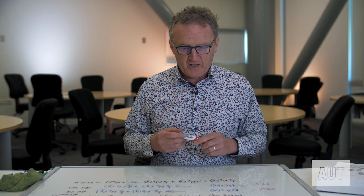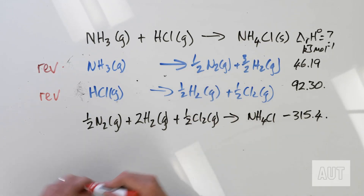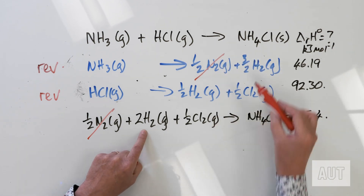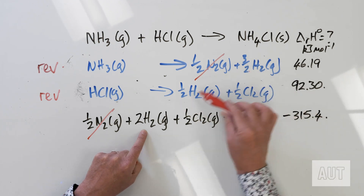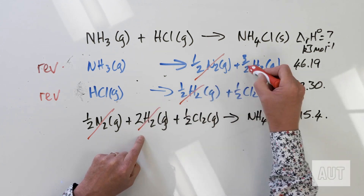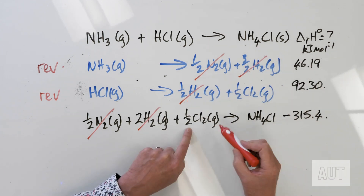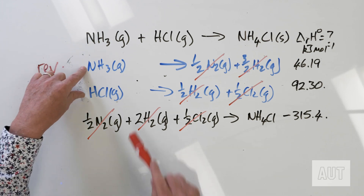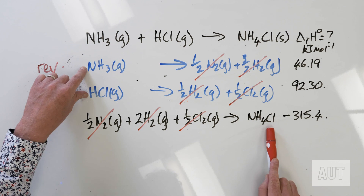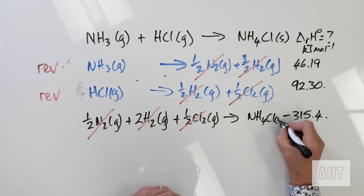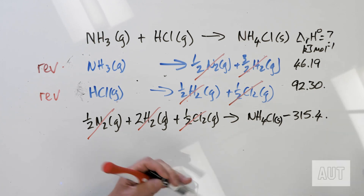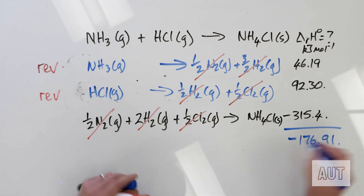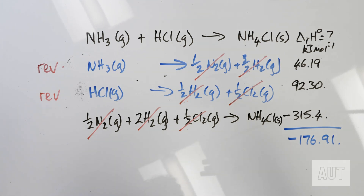If we've done everything correctly, everything should cancel out. We've got one half N2 on opposite sides — gone. We've got 2H2 in the ammonium chloride equation, and three halves H2 plus one half H2 from the reversed equations — three halves and a half makes two, so the 2H2 cancels out. We've got one half Cl2 on the left-hand side and one half Cl2 on the right-hand side — those cancel too. We're left with NH3 gas plus HCl gas giving NH4Cl solid, and adding up those numbers gives minus 176.91 kJ per mole — the same answer as before.